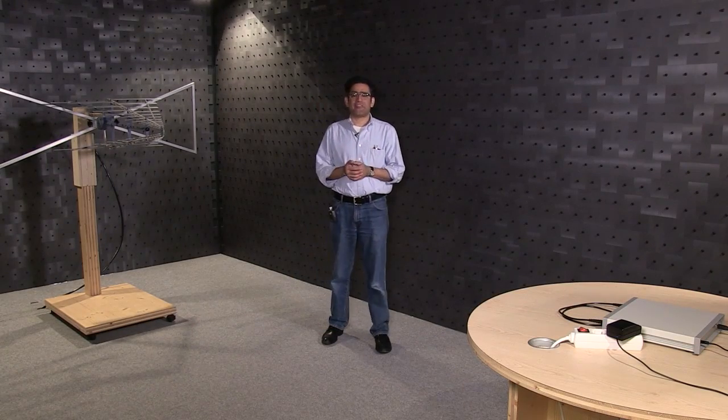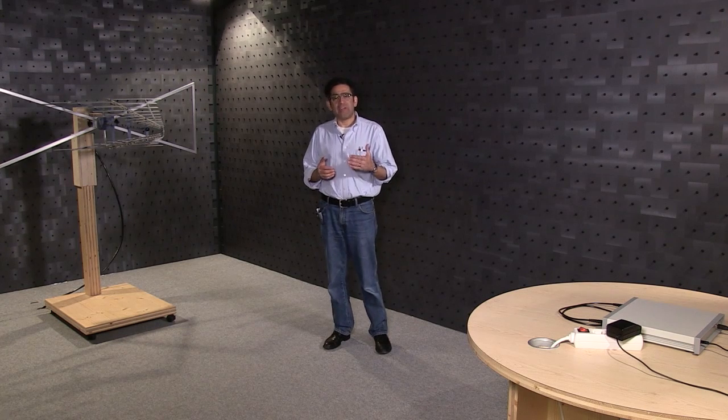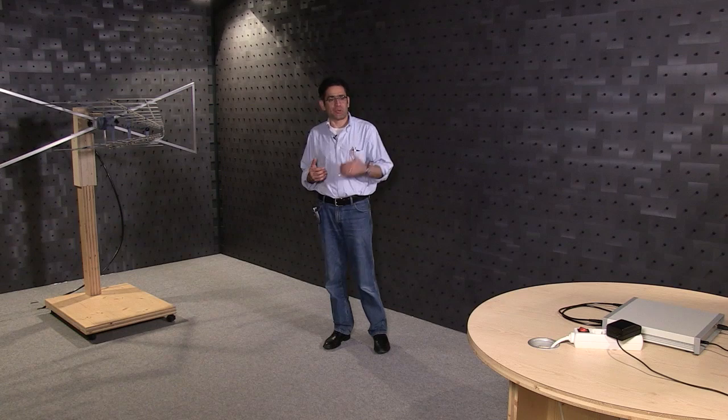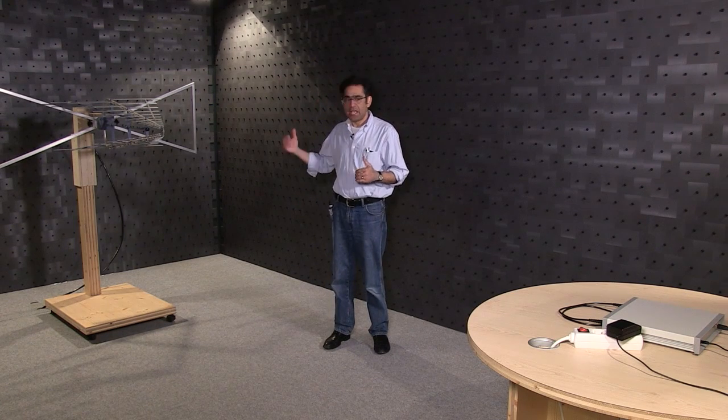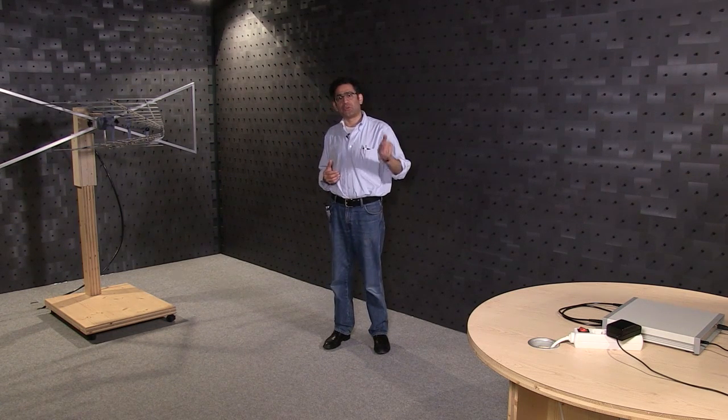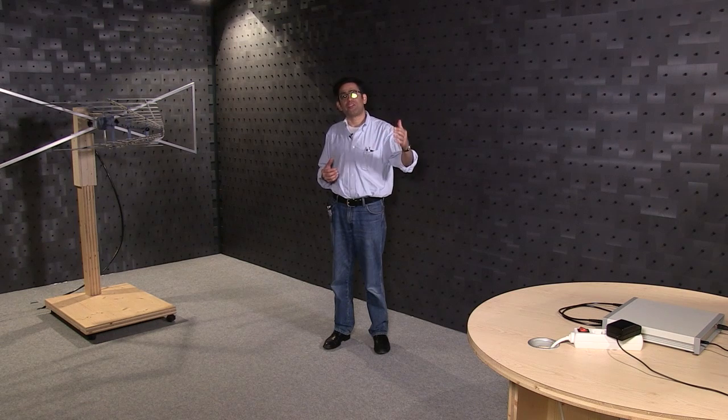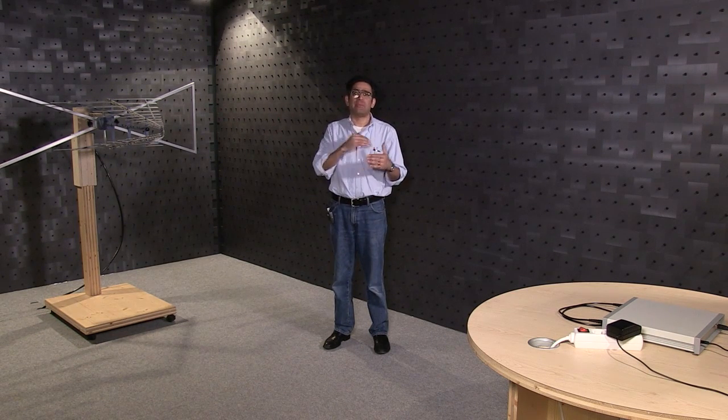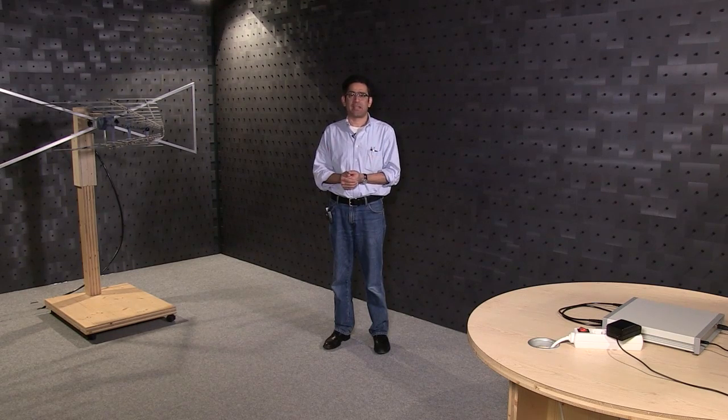The test setup is defined in the standard and it may vary slightly depending on your product or application but typically it is a wooden table and an antenna and the device under test is placed on the wooden table and the emissions from this are picked up by the antenna and then it is compared against a limit line which is again defined in the standard.